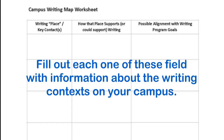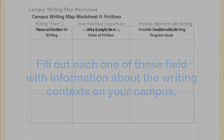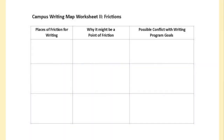Then brainstorm about how that place, person, or people could support your programmatic writing initiatives. Finally, consider how these places and people align with your program's writing goals. It can also be helpful to know about the points of friction that exist on your campus so that you can plan strategic paths around them or enlist allies in addressing them.